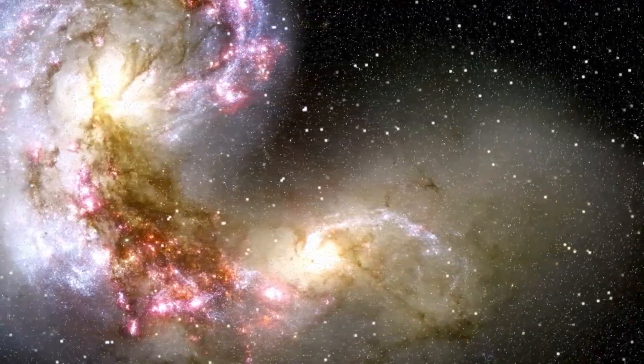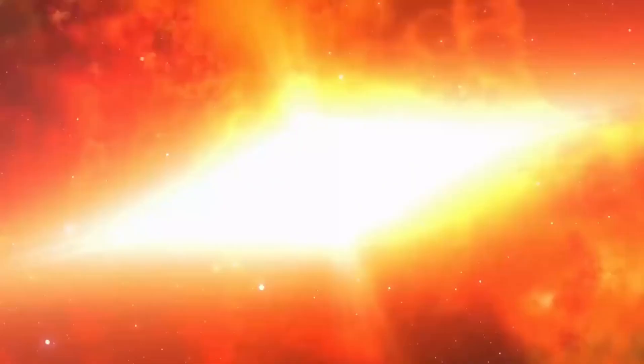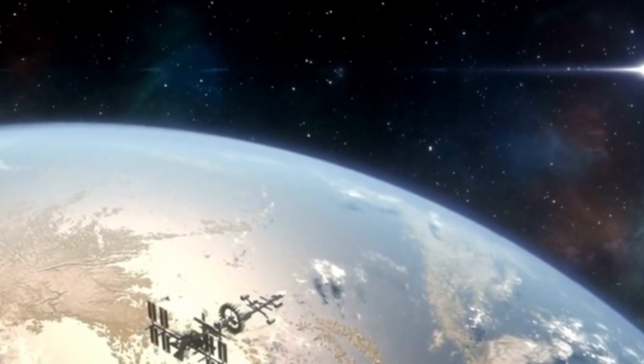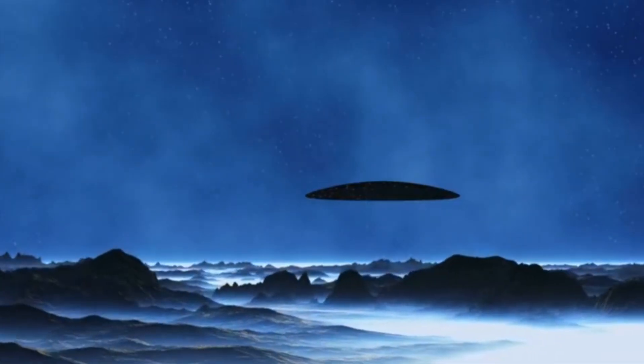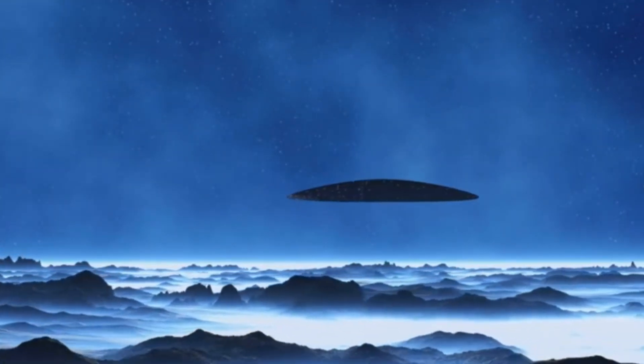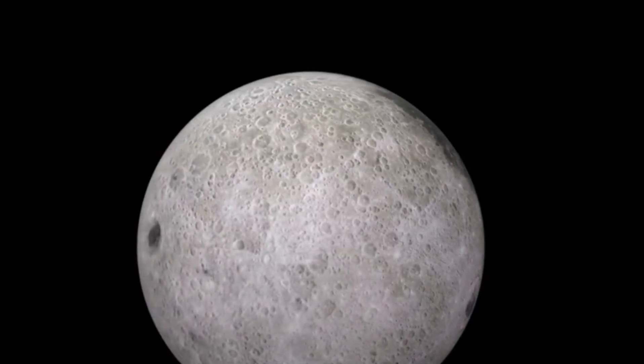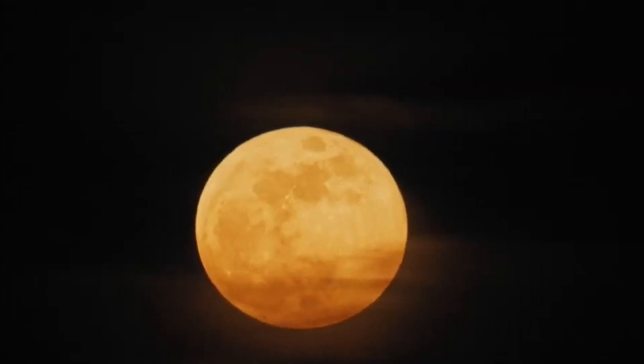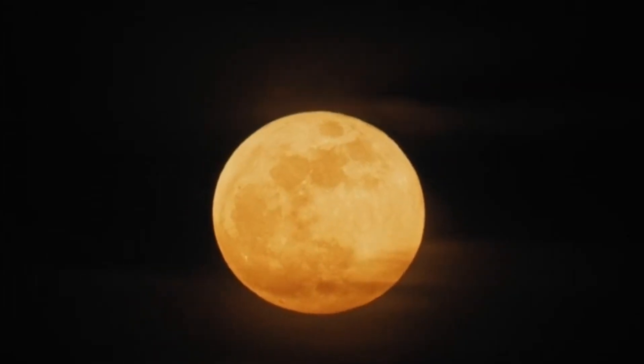Studying how big planets affect Pluto's path gives us important clues about how our whole solar system works. It shows us that where each planet is and how it moves can change the paths of other things in space. Even though space is complicated, some top scientists are worried that Pluto might crash into Neptune. This makes them wonder why this might happen, even though it seems unlikely.